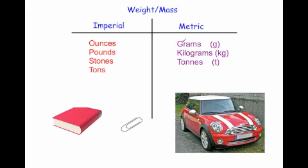The metric versions of those would be grams for small objects — a paperclip is one gram. A kilogram — a large book would be about a kilogram. And a metric tonne, spelled T-O-N-N-E, for very large objects — a Mini Cooper is about 1.2 tonnes.